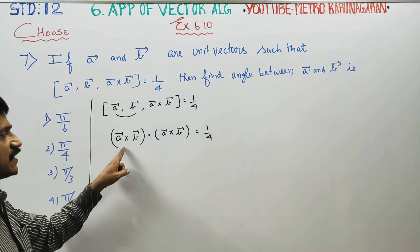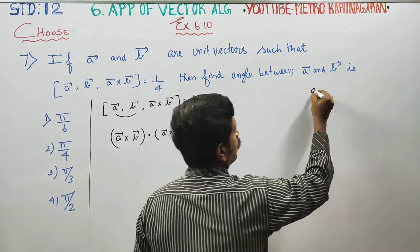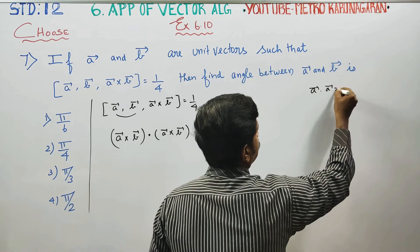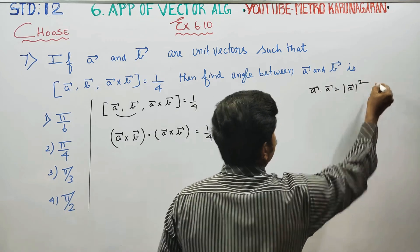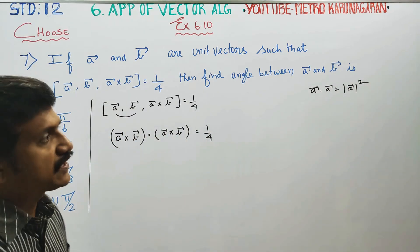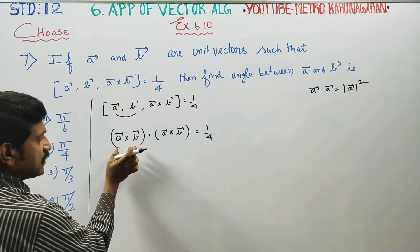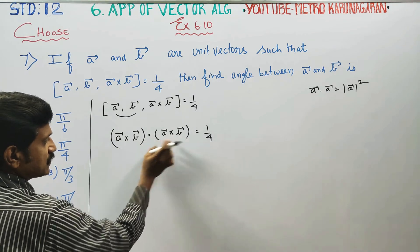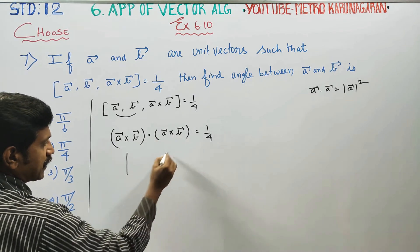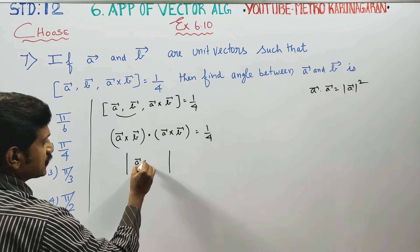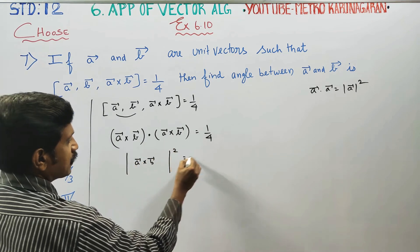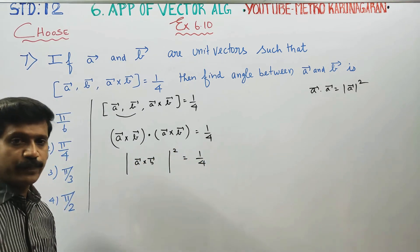From 11th standard, we know: (a vector dot a vector) equals the magnitude of a vector whole square. So the magnitude of a vector whole square, dot this, gives magnitude of (a cross b) whole square equal to 1 by 4.